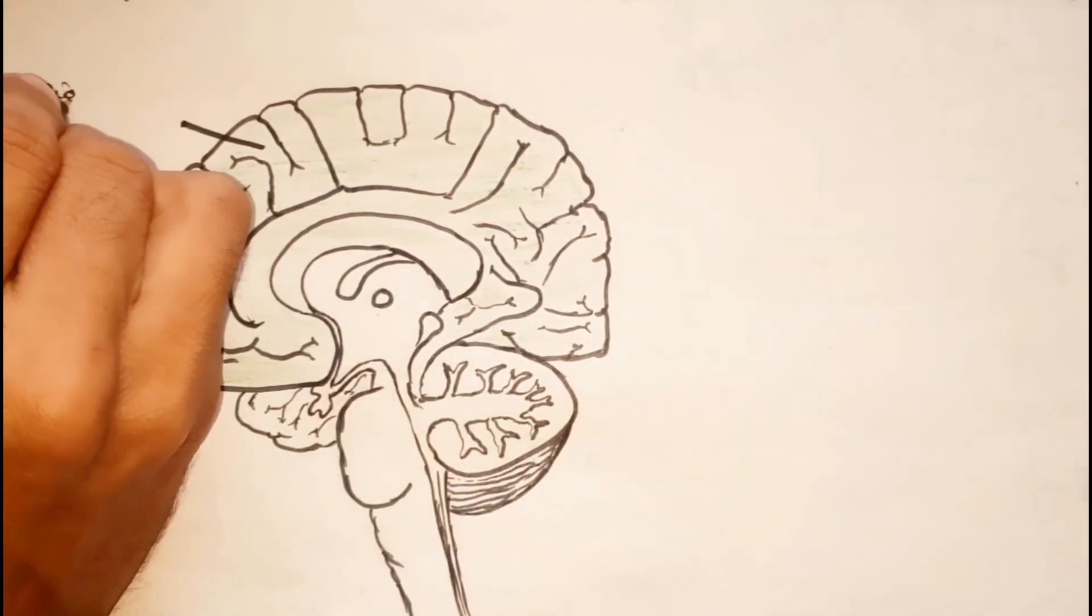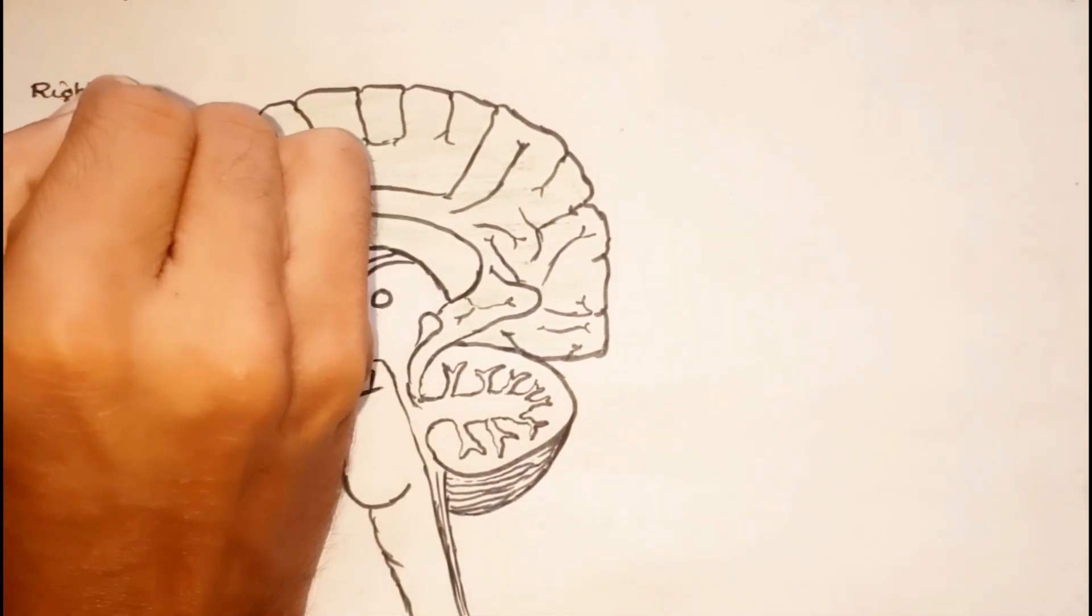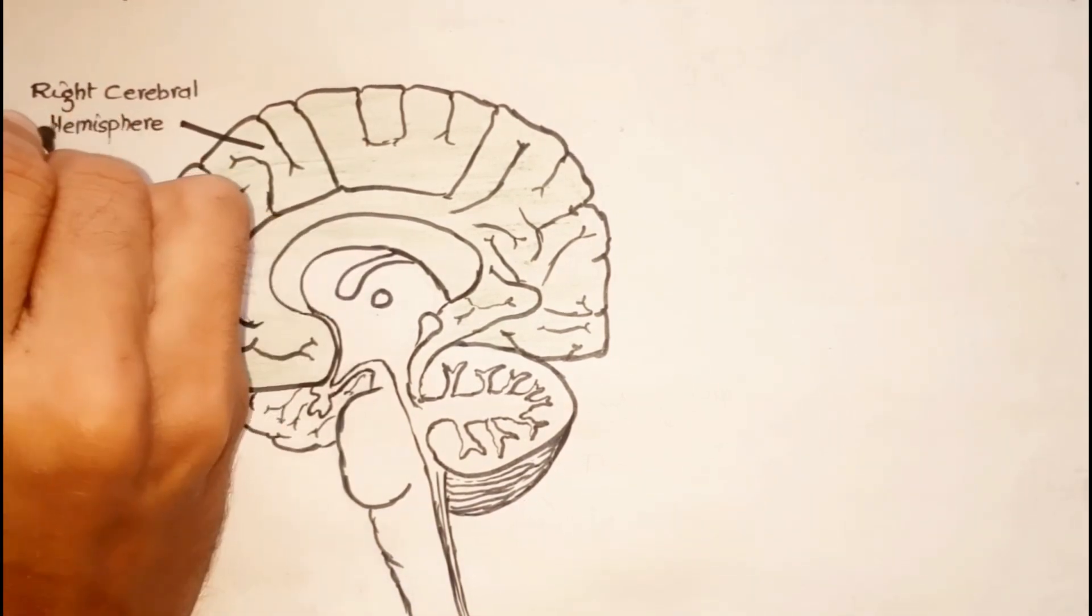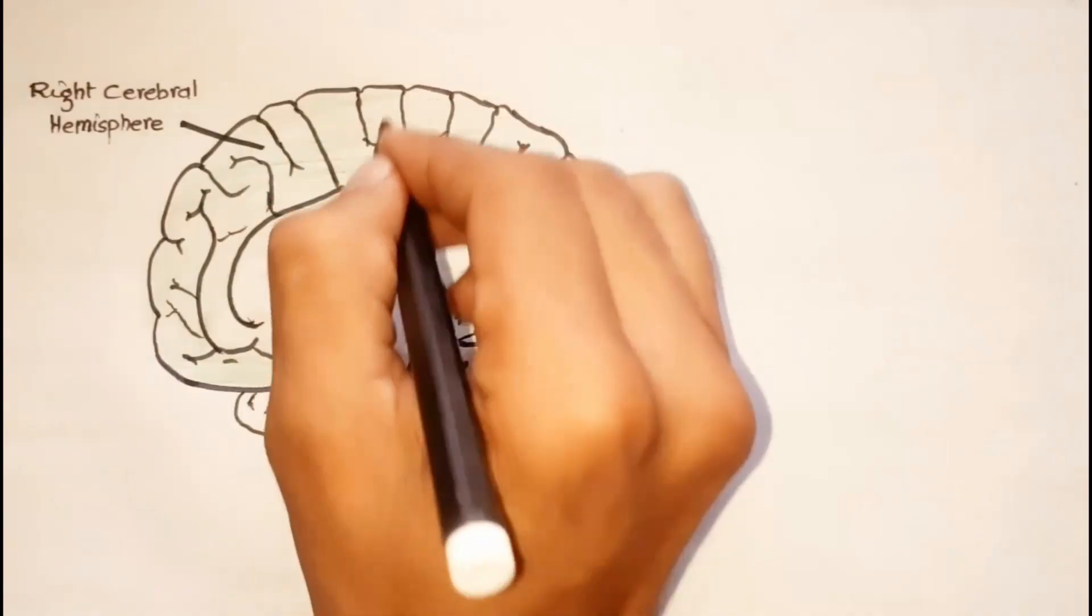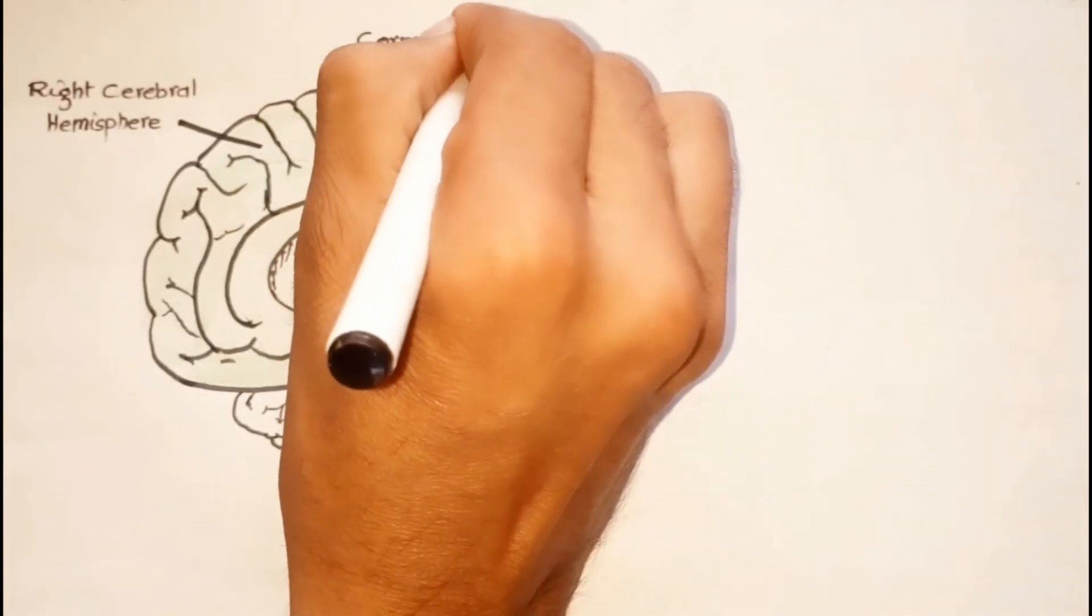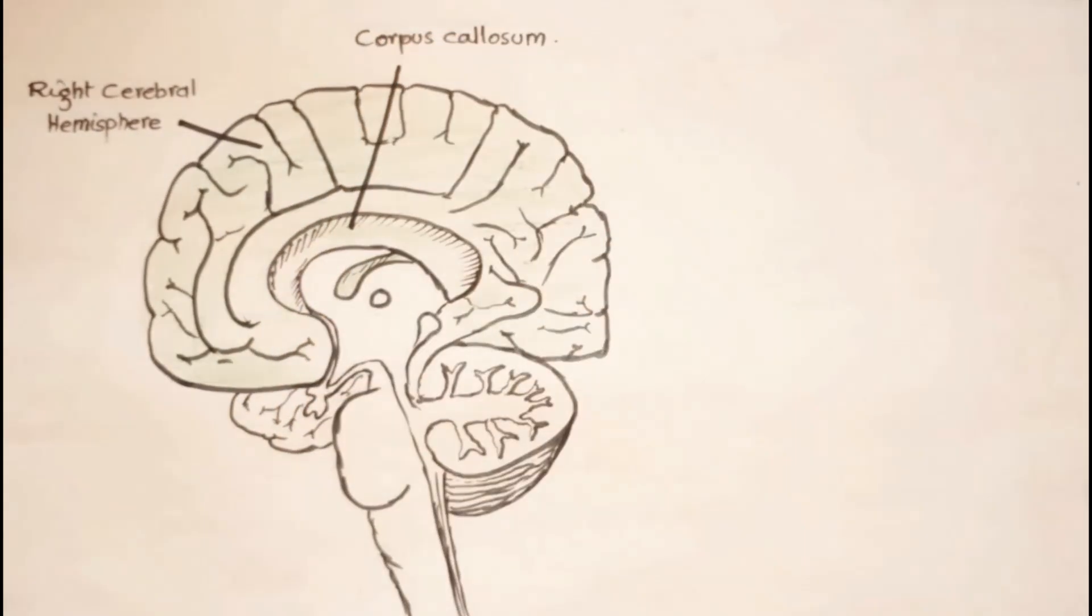The telencephalon includes the two cerebral hemispheres. Here is the right cerebral hemisphere. The right and left cerebral hemispheres are interconnected with each other through the corpus callosum.